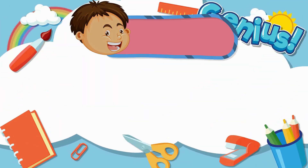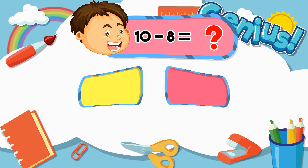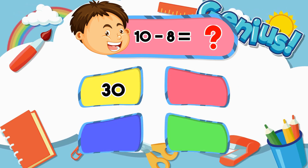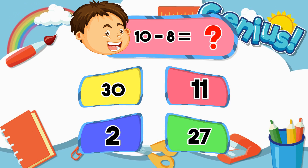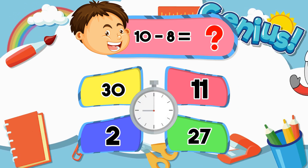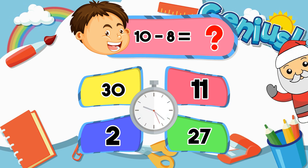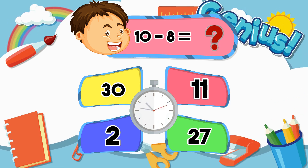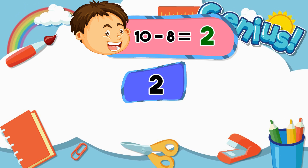What is 10 minus 8? 30, 11, 2, 27. Answer: 2.